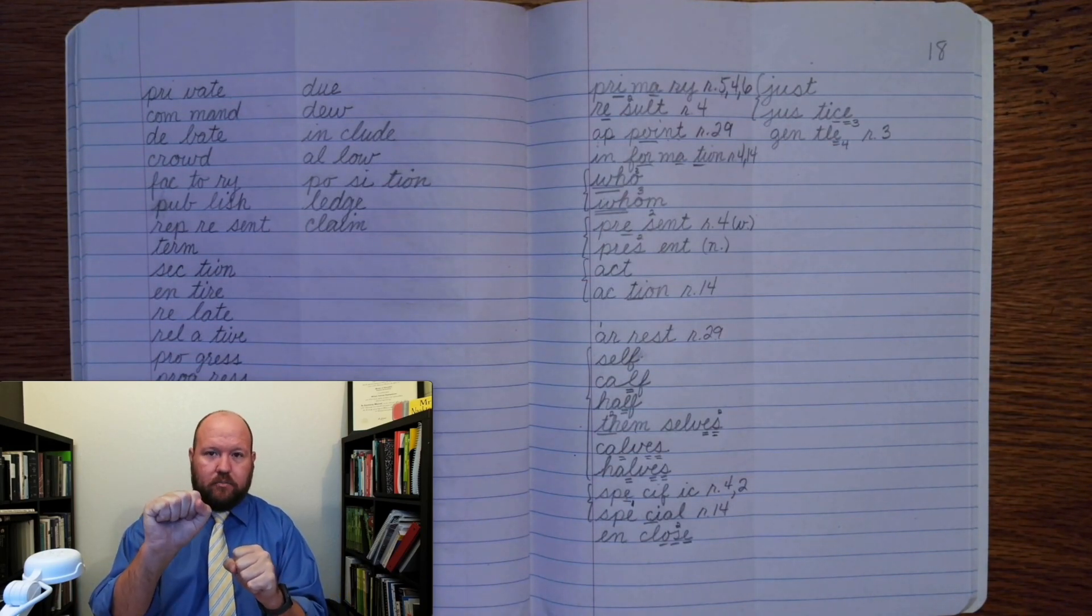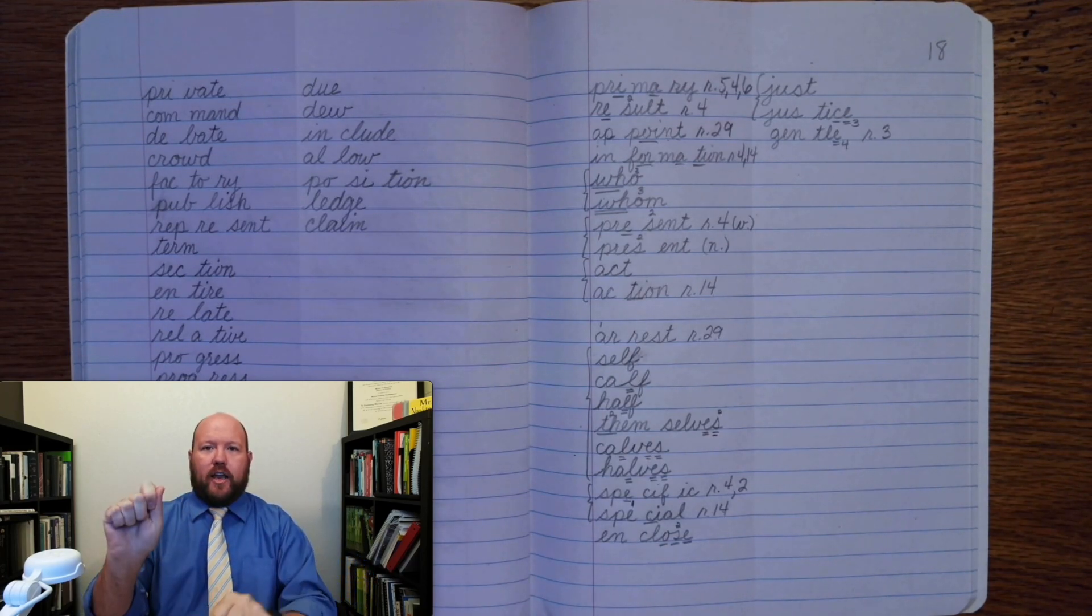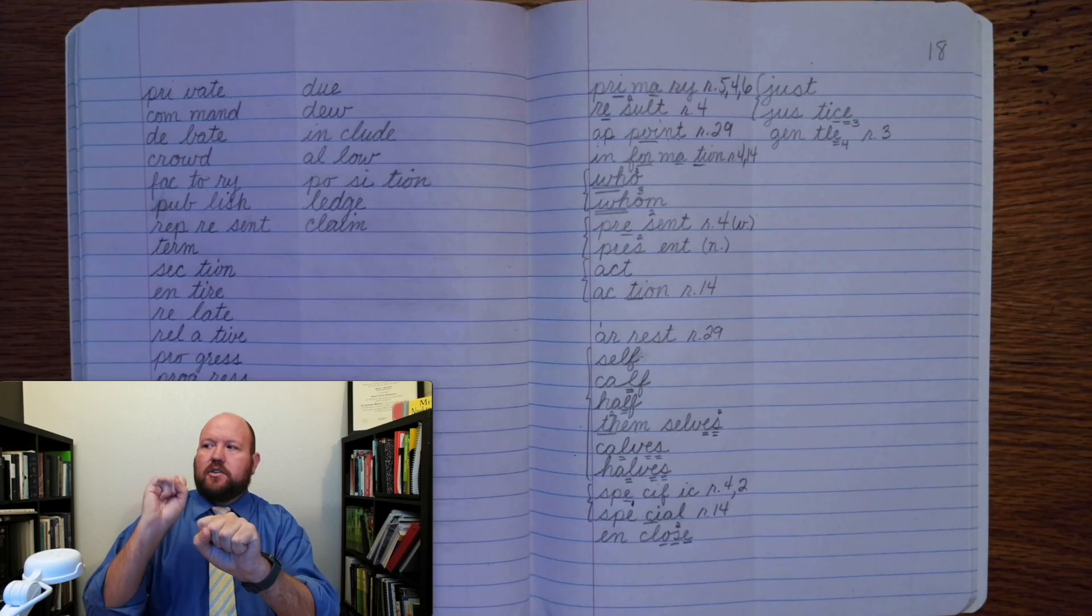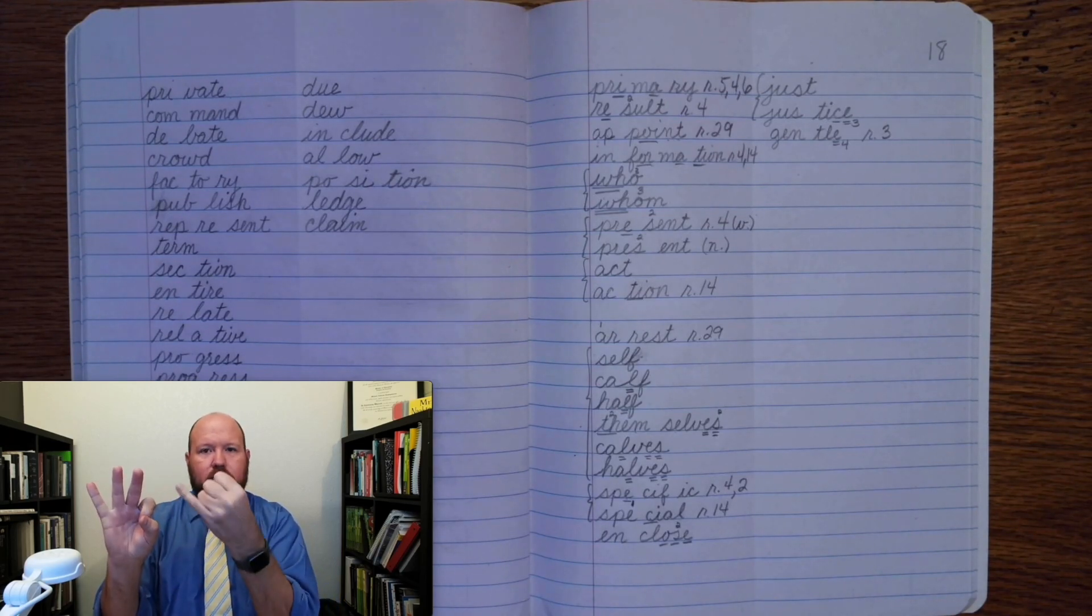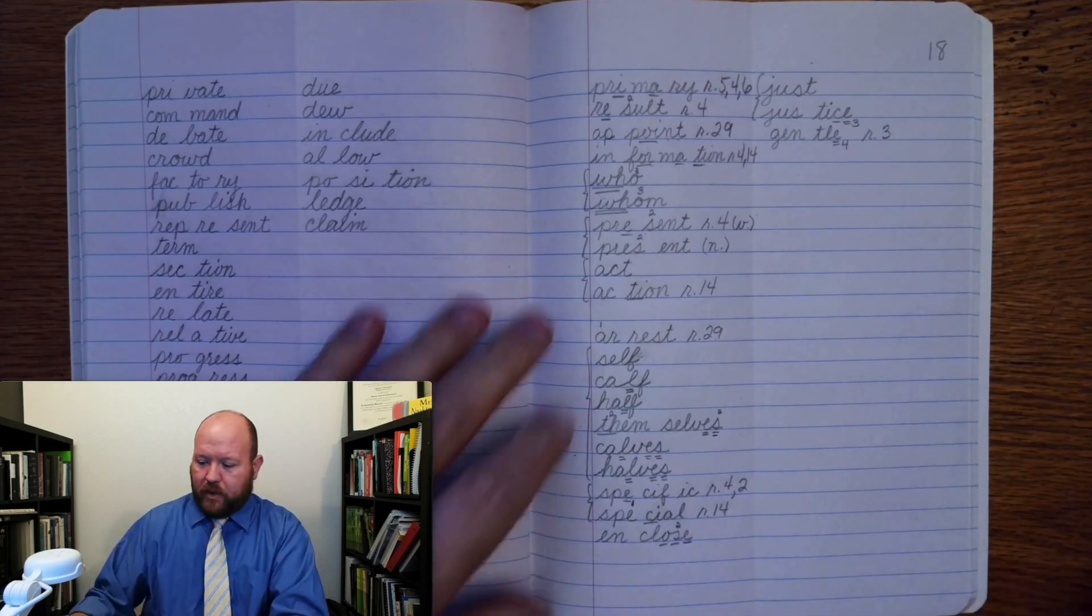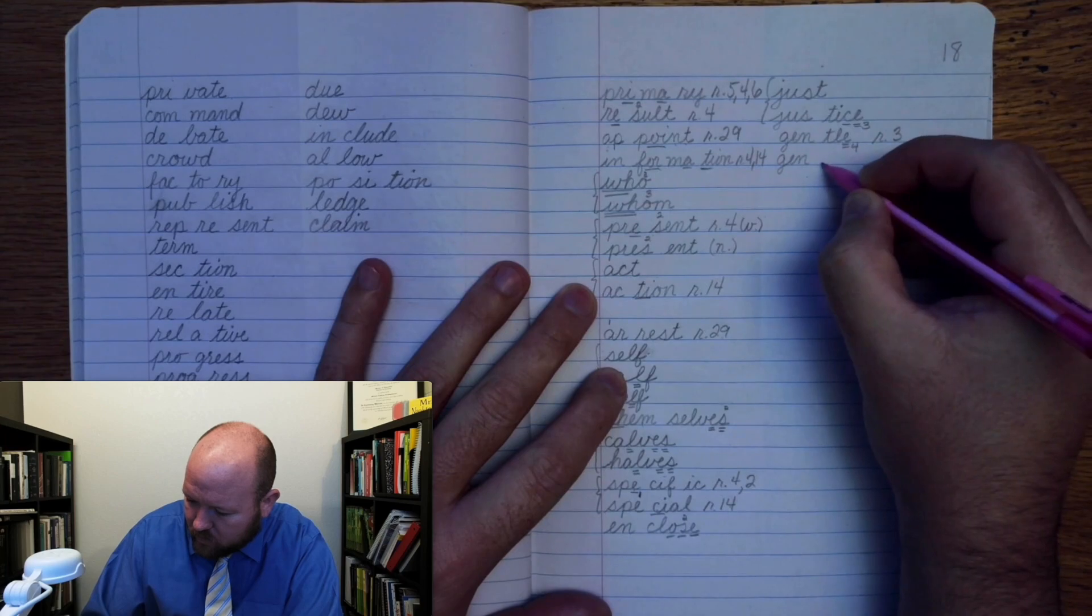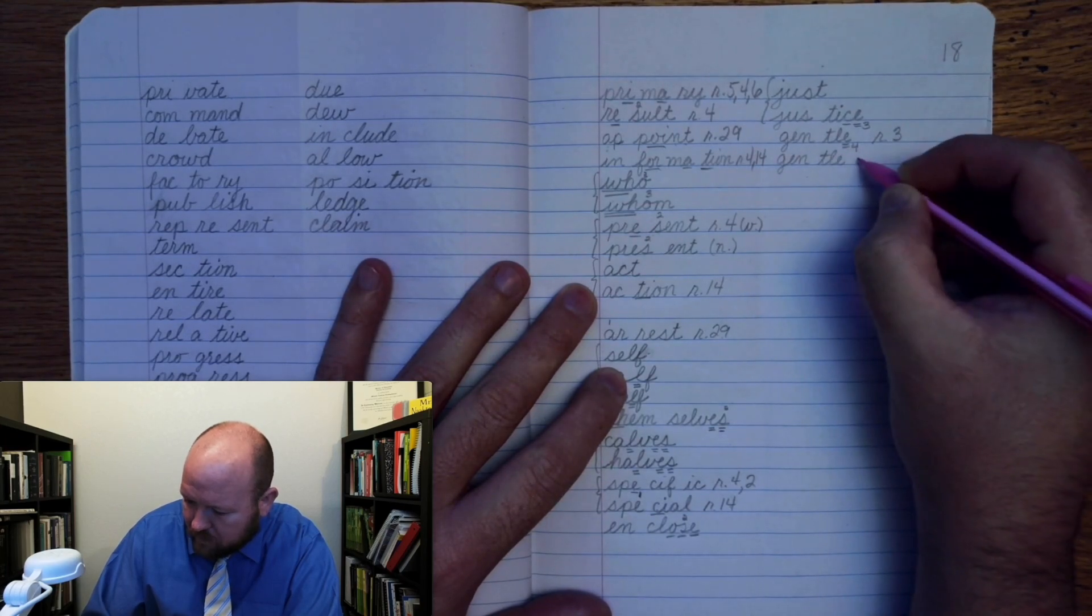Gentleman. Base word gentle. Base word man. Gentle, add man to make the word gentleman. Gentle-man. G-E-N-T-L-E-M-A-N. Gentleman.